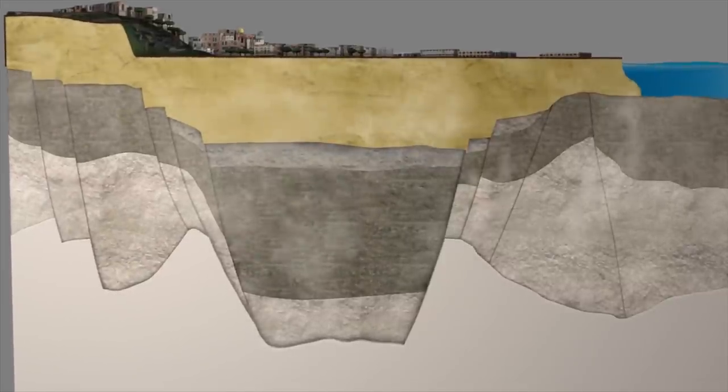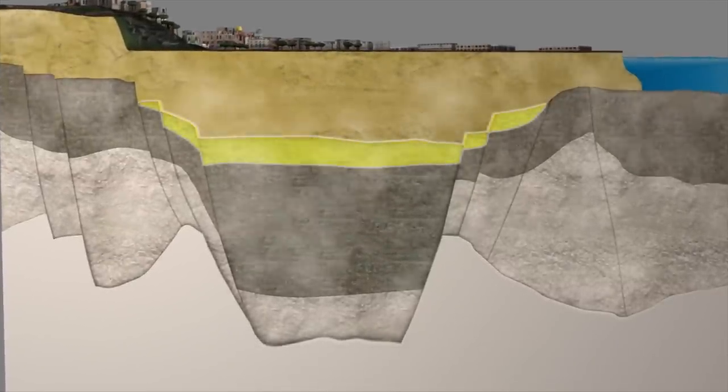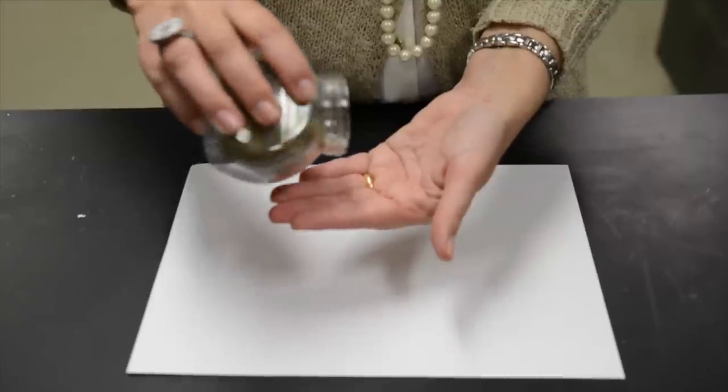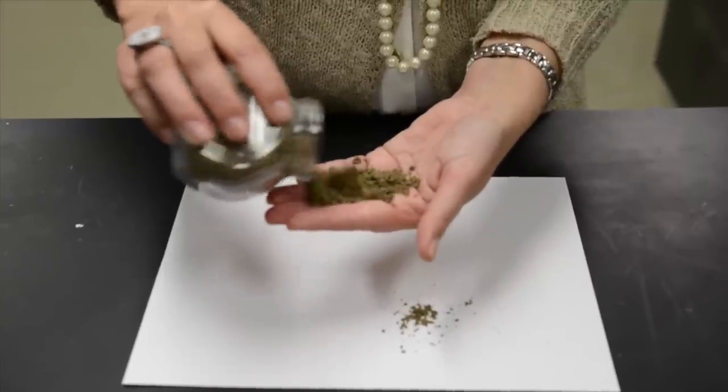In the Campi Flegrei Caldera there is a layer which we call a cap rock. The cap rock is made of pozzolana, the volcanic ash from Campi Flegrei.